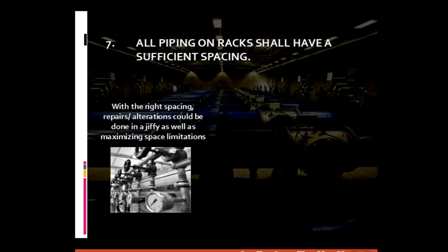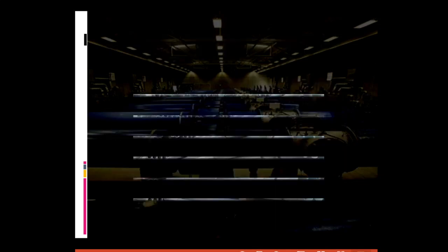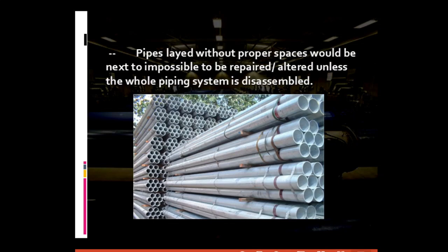For general piping requirement number seven: all piping on the racks should have sufficient spacing to allow possible repairs or alterations. With the right spacing, repairs or alterations can be done as soon as possible while maximizing space limitations. As shown in the picture — a typical case in a ship — although the spacing may be slight in appearance, there are still workable spaces for repairs or alterations. Pipes laid without proper spaces would be nearly impossible to repair or alter unless the whole piping system is disassembled.